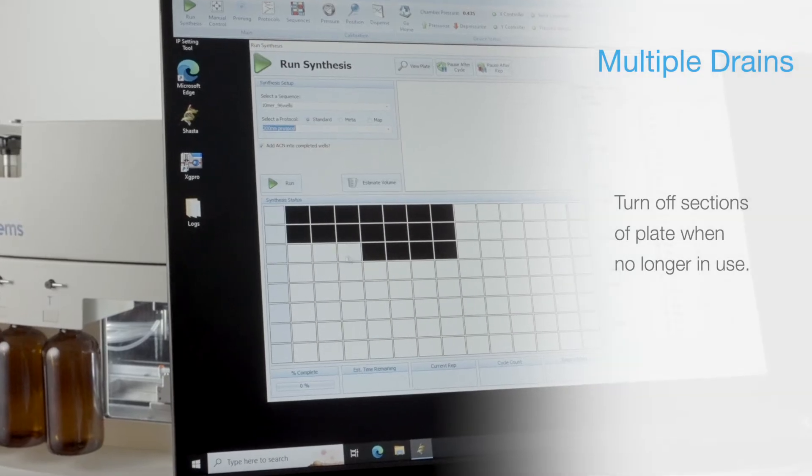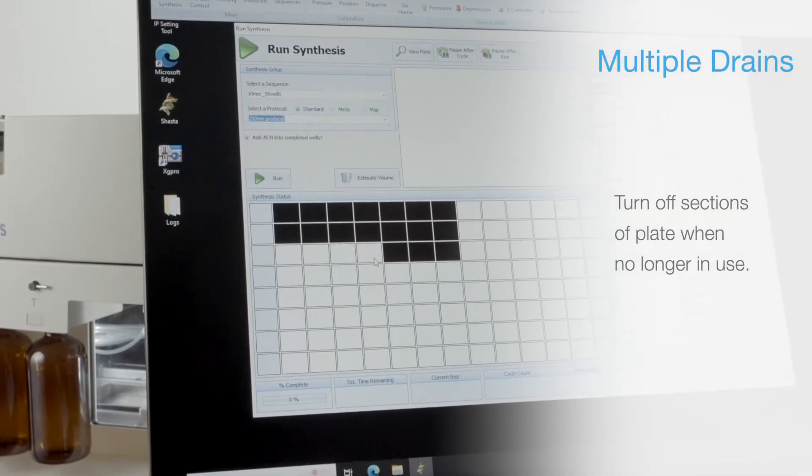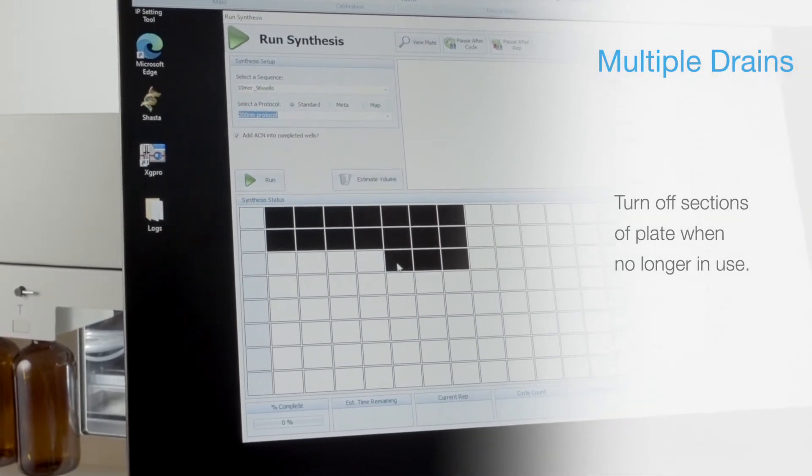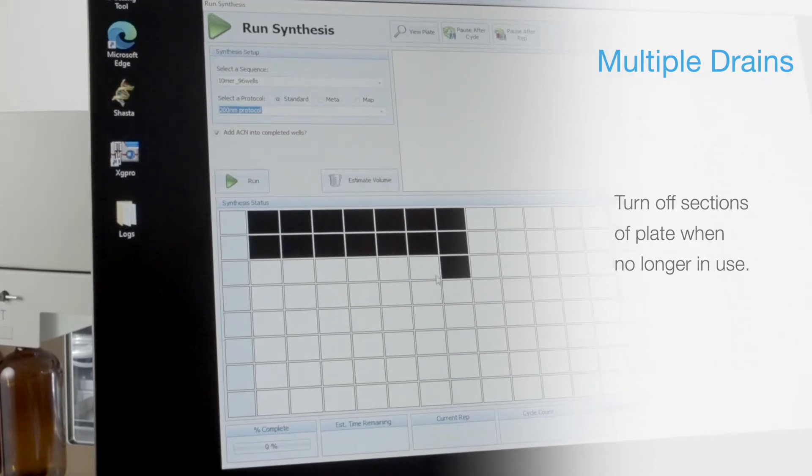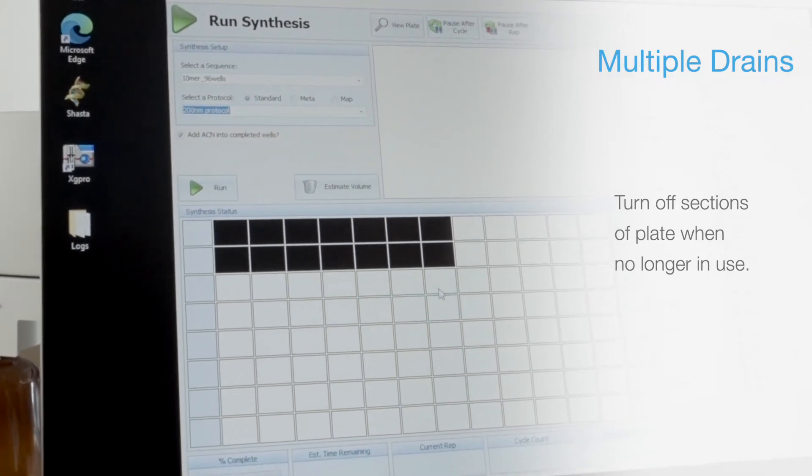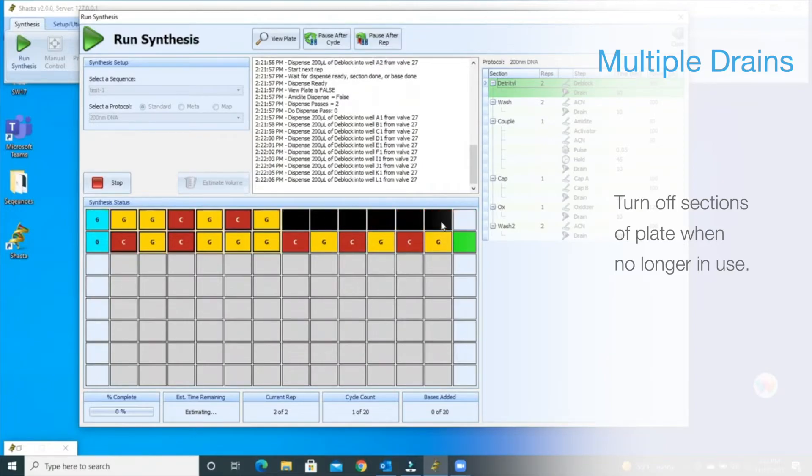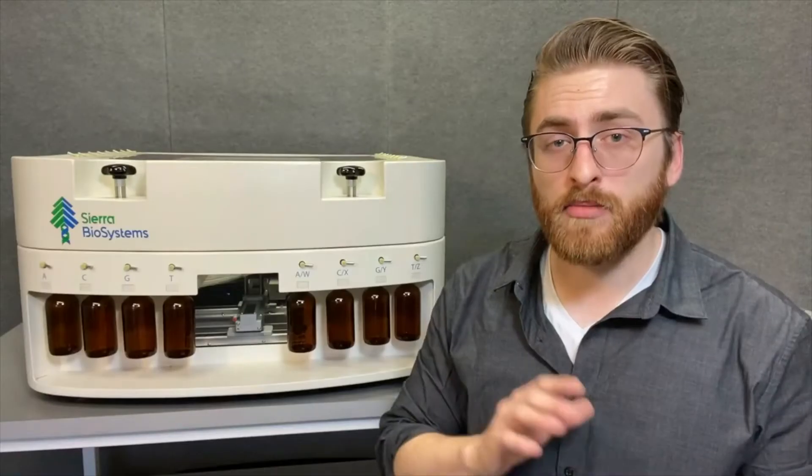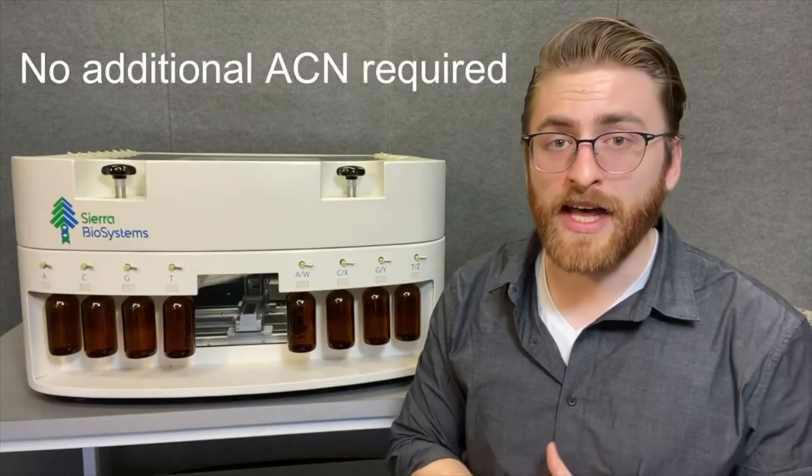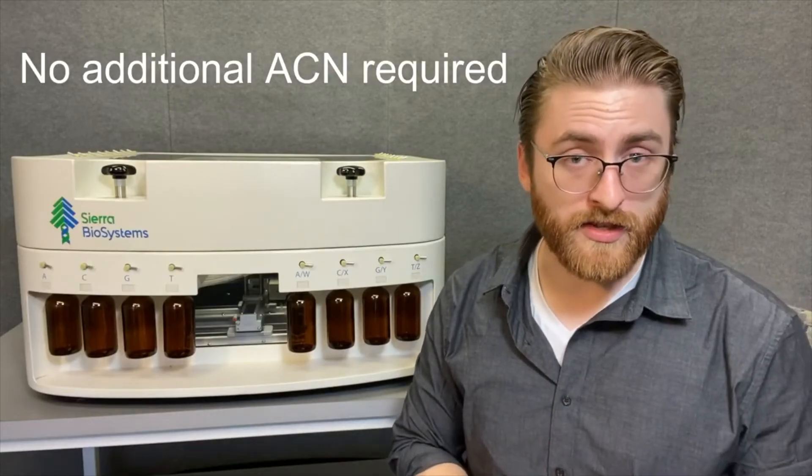We can also turn off sections of the plate when they are no longer in use, meaning if you were to run 80 base strands in one section of the plate and 20 base strands in another, the section of the plate running 20 base strands would turn off and allow the 80 base strands to proceed with the same purge consistency they had when the 20 base strands were being made without the need to add any additional ACN during the synthesis.